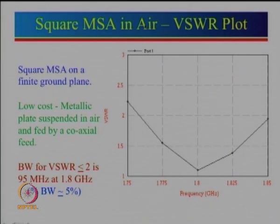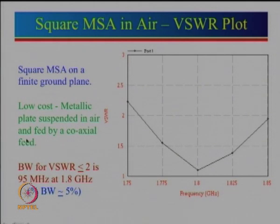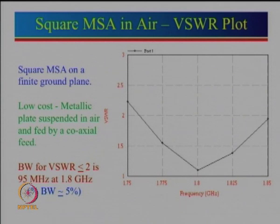For simulation we have used epsilon r = 1. What we have taken is a square microstrip antenna on a finite ground plane. A low-cost metallic plate is suspended in air and fed by a coaxial feed. The resonance frequency is designed to be 1.8 GHz, and the VSWR less than 2 bandwidth is roughly about 95 MHz — approximately 5%. So this result can be thought of as a problem: design an antenna at 1.8 GHz with 5% bandwidth.